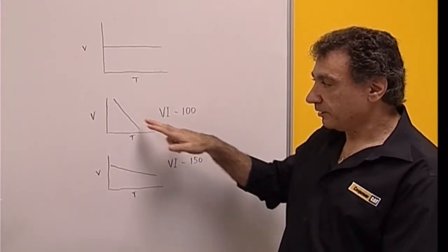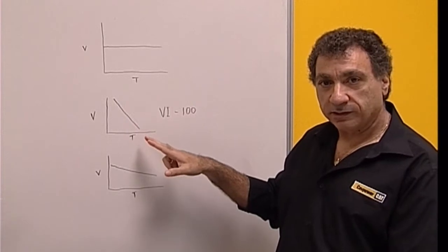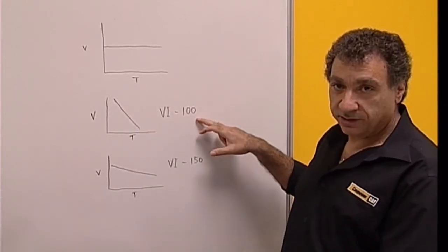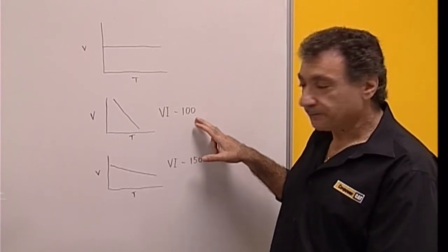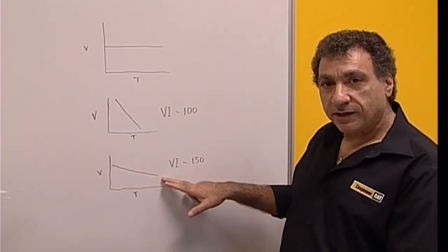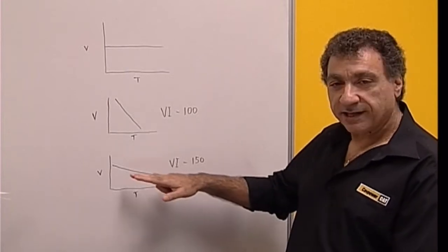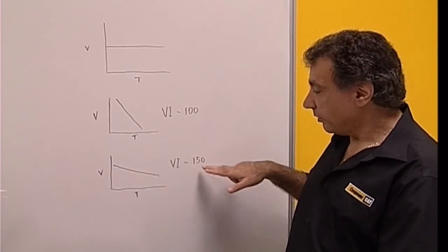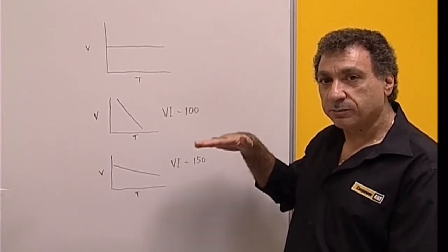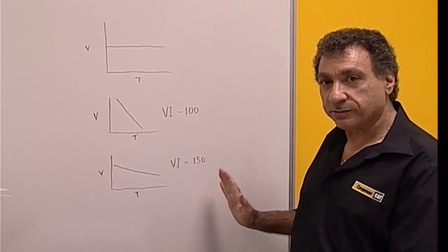Mono grades typically drop off quite quickly in their viscosity as the temperature increases. So they typically have a viscosity index of approximately 100. The VIs with higher viscosity index have a flatter curve. So the higher the viscosity index, the better it is because it means that it has a more stable viscosity over a wider temperature range.